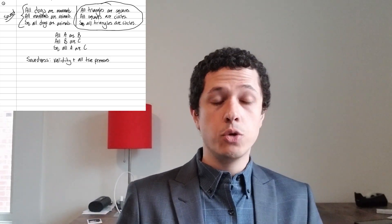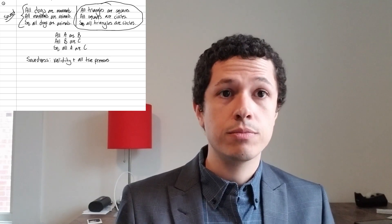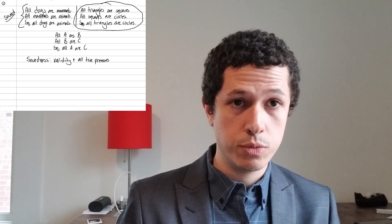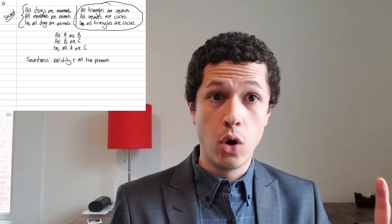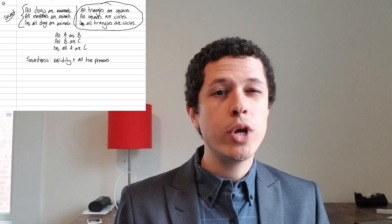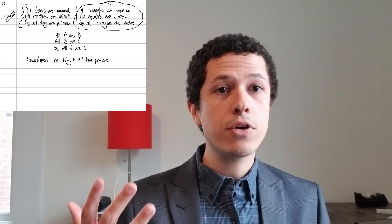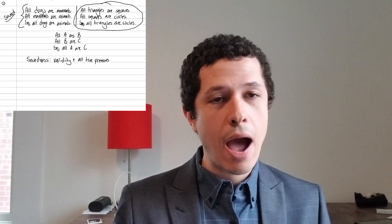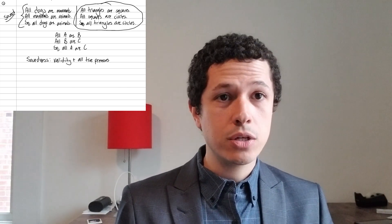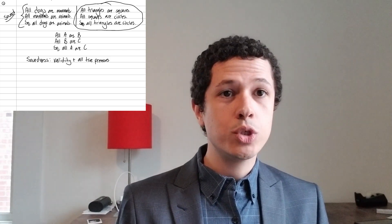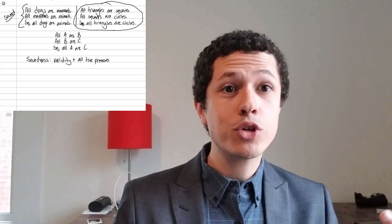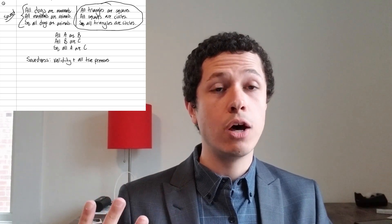Here's the thing about soundness. If you find a sound argument — one that's valid, so its premises guarantee its conclusion, and furthermore has all true premises — then we've learned that the conclusion must be true. We are rationally compelled to believe the conclusion of any sound argument, no matter how much we don't like it. If we ever take issue with a deductive argument and don't like its conclusion, we can't just reject the conclusion. We must either show the argument is not valid, or show that it has at least one false premise — that it failed to have one of these two features of really good arguments.